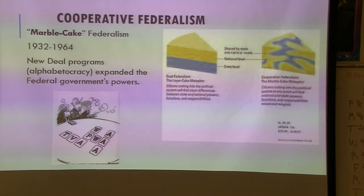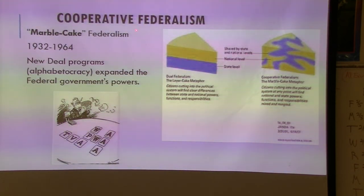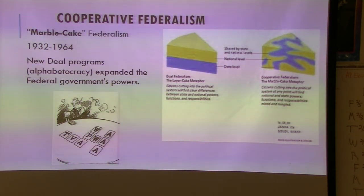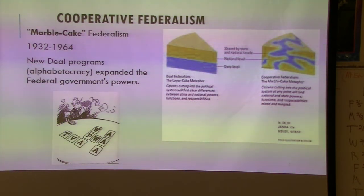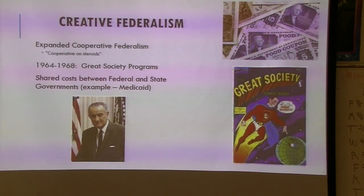Cooperative federalism starts in 1932 — the election of FDR. This is where there's a lot more expansion of federal power. Those New Deal alphabet-soup programs brought it. Cooperative federalism is also called 'marble cake' — unlike layer cake where state and federal are separate distinct layers, marble cake blends them together much more. For the AP side, cooperative federalism went on steroids during the Great Society programs under LBJ, mightily expanding federal power.